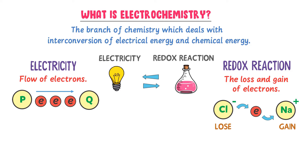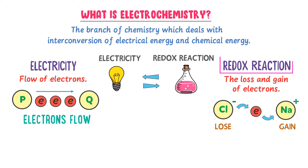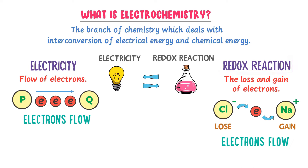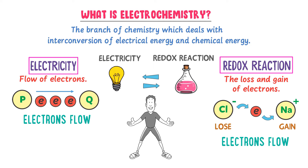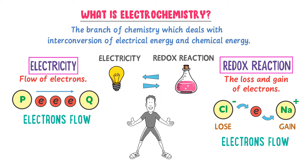In electricity, electrons flow from one point to another point, while in a redox chemical reaction, electrons flow from one ion to another ion. So there is a similarity between electricity and redox chemical reaction regarding the flow of electrons. Therefore, we use either electricity or redox chemical reaction to generate the flow of electrons.